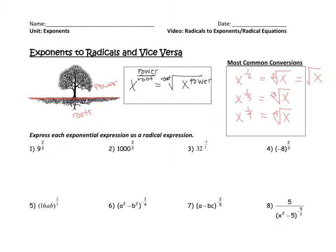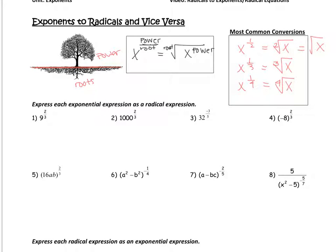Let's take a few examples. Express each exponential expression as a radical. The root is on the bottom and the power is on top, so for example one, this would be the third root of nine to the second power. For example two, again the root is on the bottom and the power is on top, so this would be the cube root of 1000 squared.